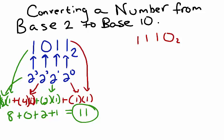Then, I'll identify the positional values for each digit. Here, I have 2 to the 0. This one is 2 to the first. Then, I have 2 squared. And then, I have 2 cubed.